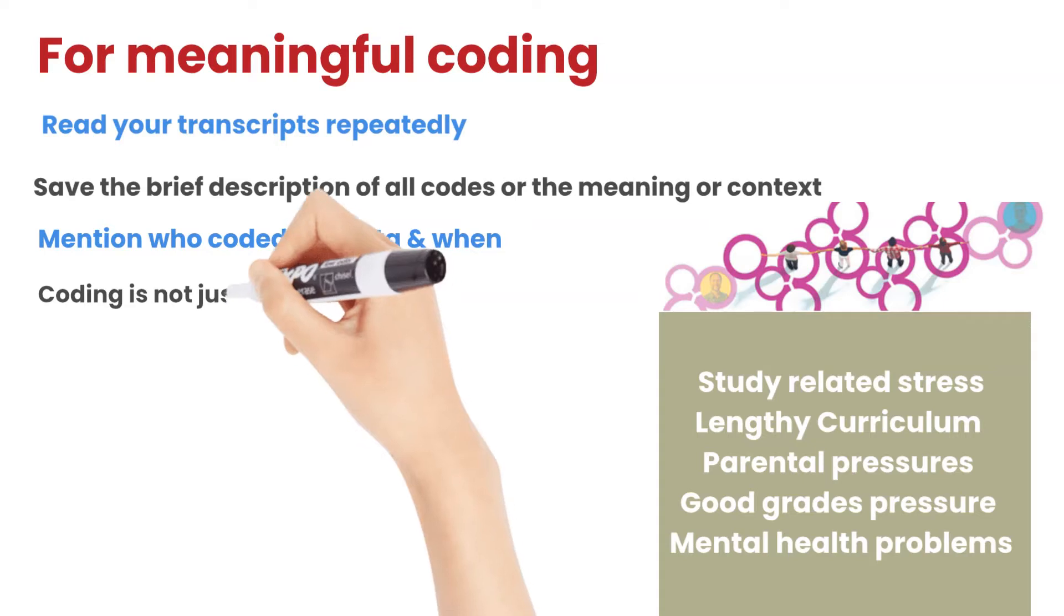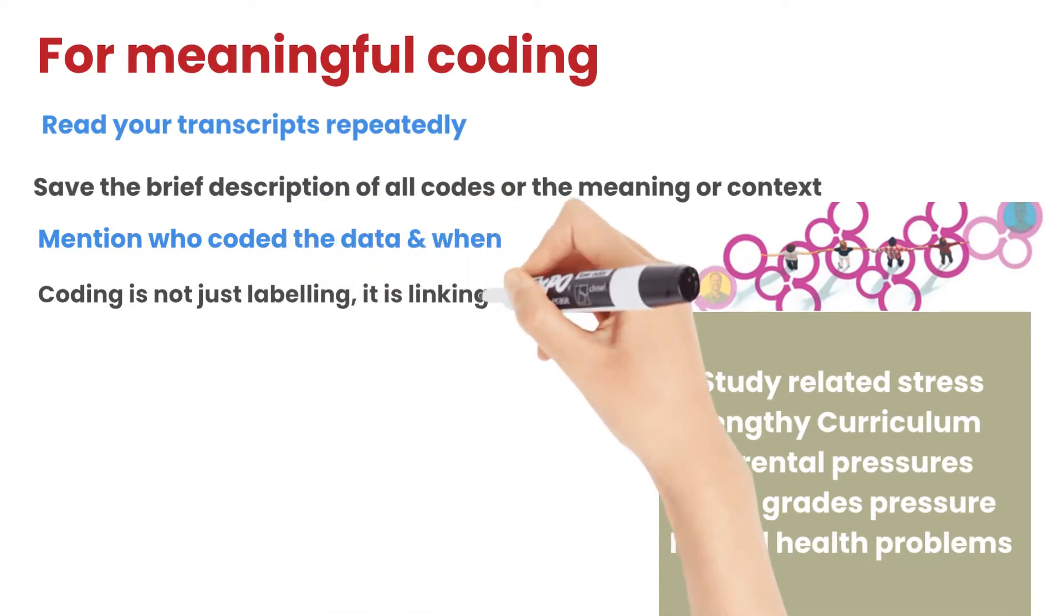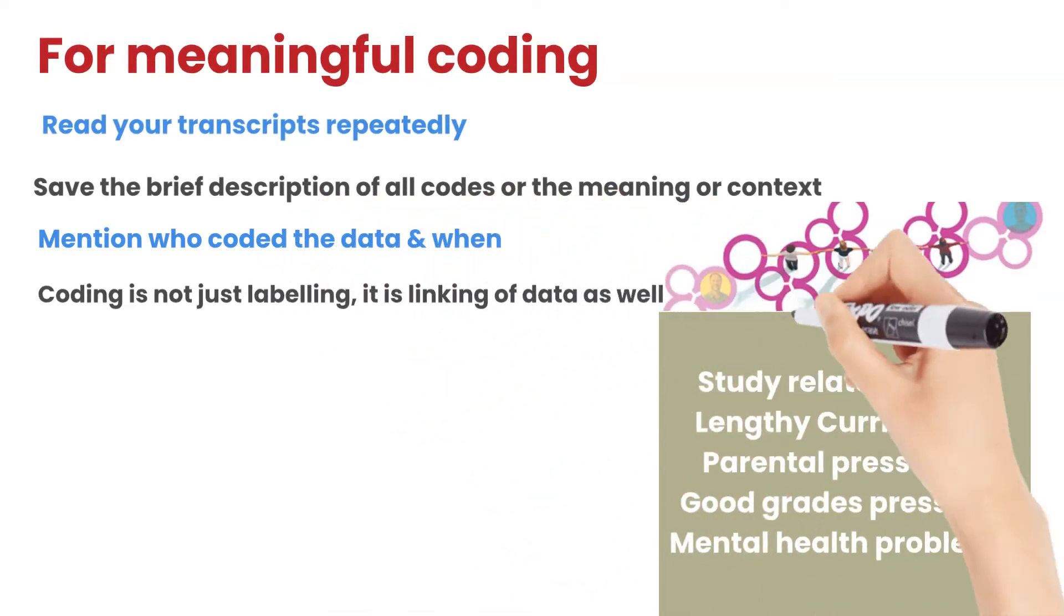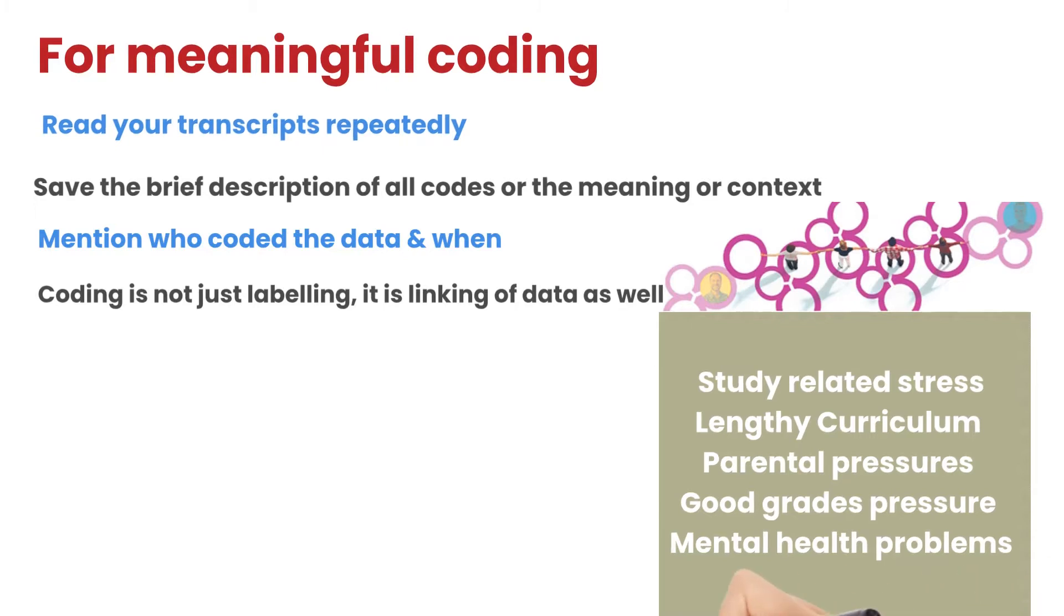Coding is not just labeling. It is linking of data as well. See, in this previous example, we can merge or link three aspects. For example, lengthy curriculum, parental pressures, grade pressures as reasons of study stress. So you can see that we can merge or combine all the related aspects or all the similar codes together.